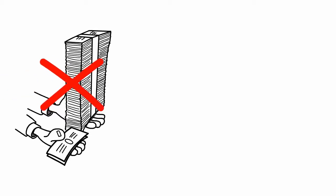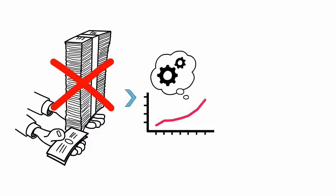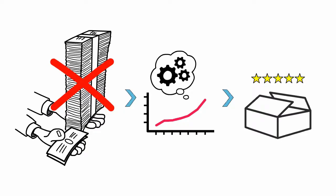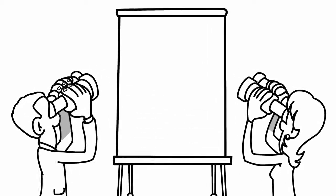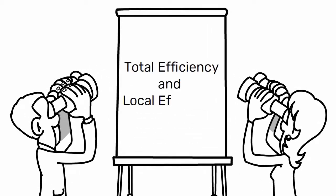In order to truly increase efficiency, we need to focus on reducing waste, increasing productivity, and improving quality, rather than just increasing output. Another important concept in lean manufacturing is the difference between total efficiency and local efficiency.